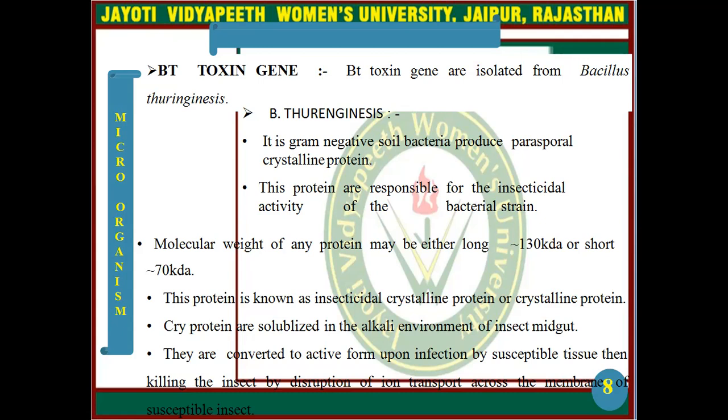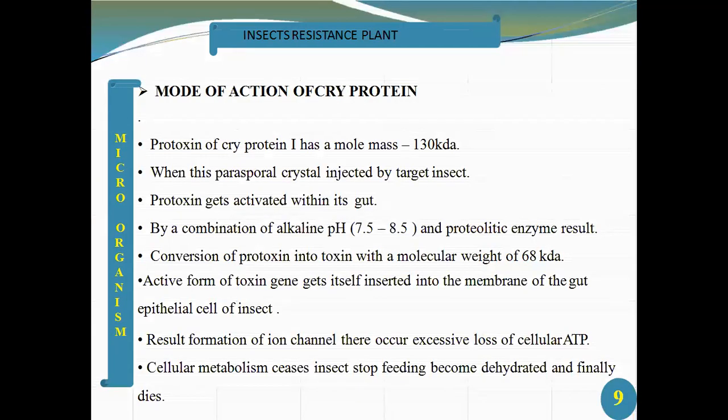These proteins are known as insecticidal crystalline proteins or cry proteins. Cry proteins are solubilized in the alkaline environment of the insect midgut and are converted to their active form upon ingestion by susceptible insects, killing the insect by disruption of ion transport across the membrane of the susceptible insect.